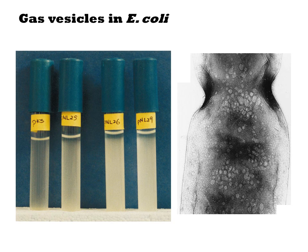Phenotypically, these vesicles cause bacteria to float in their media. If you allow an E. coli culture to sit on the benchtop without agitation, the bacteria will settle to the bottom of the tube. However, in the strains that contain gas vesicle genes, the bacteria stay afloat.